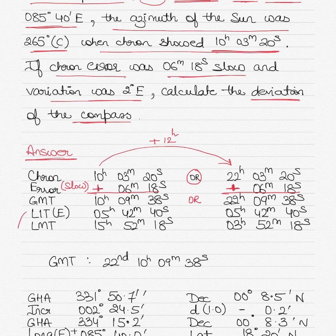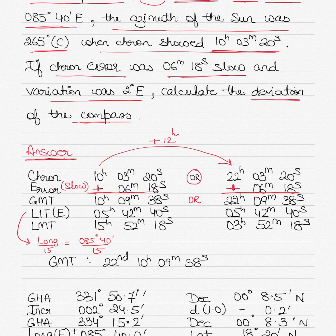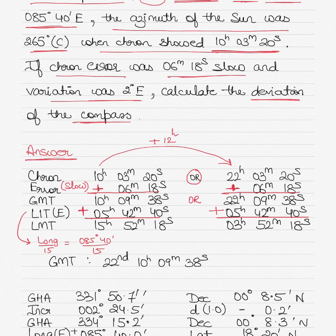To find the correct time, we apply the LIT (Longitude in Time) correction. We divide the longitude by 15: 85 degrees 40 minutes ÷ 15 gives 5 hours 42 minutes 40 seconds. Since the longitude is East, we add the LIT correction to get the LMT. This gives two LMT possibilities: 15 hours 52 minutes 18 seconds, or 3 hours 52 minutes 18 seconds.